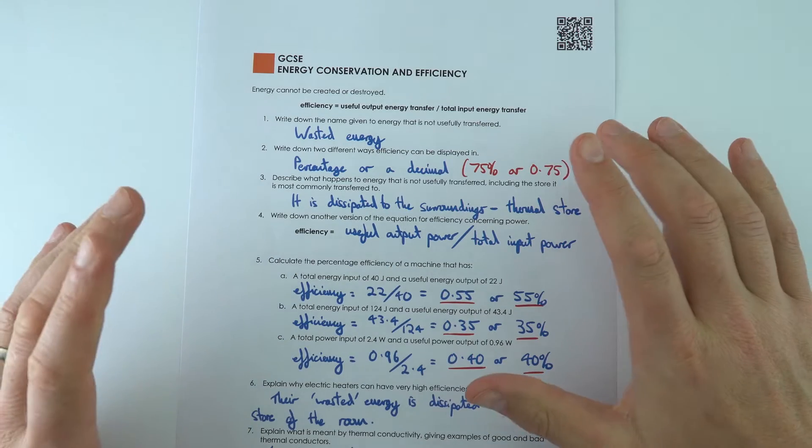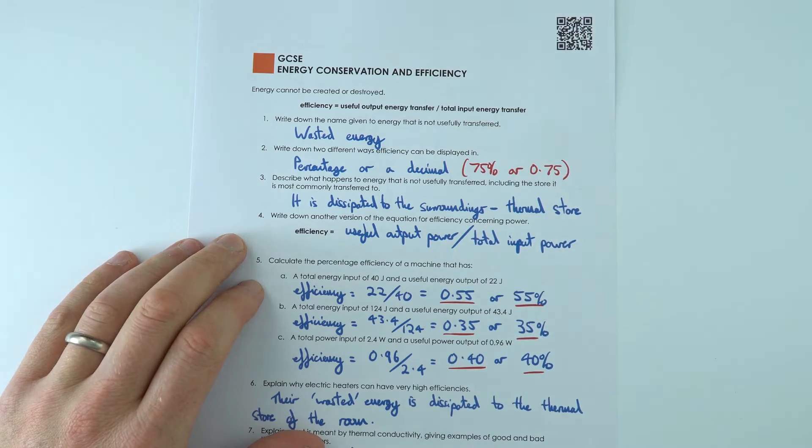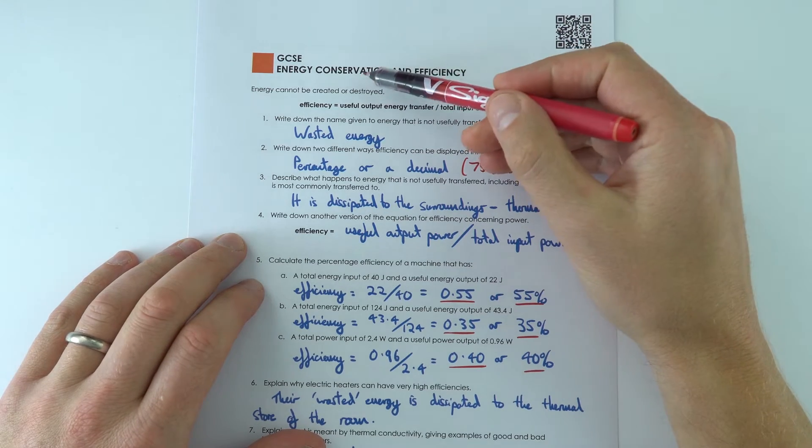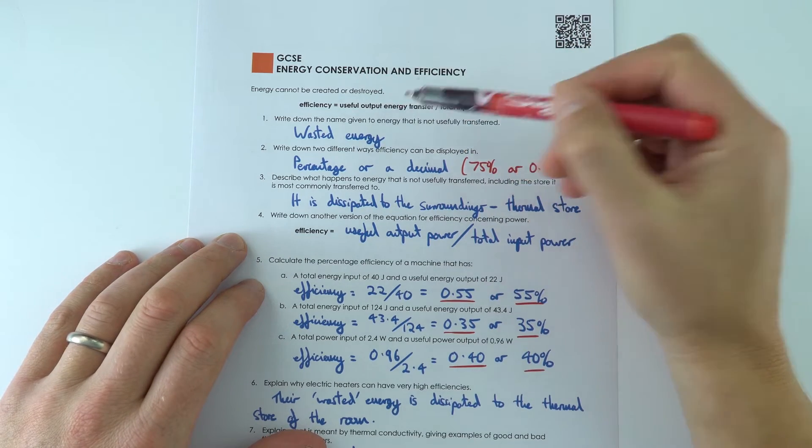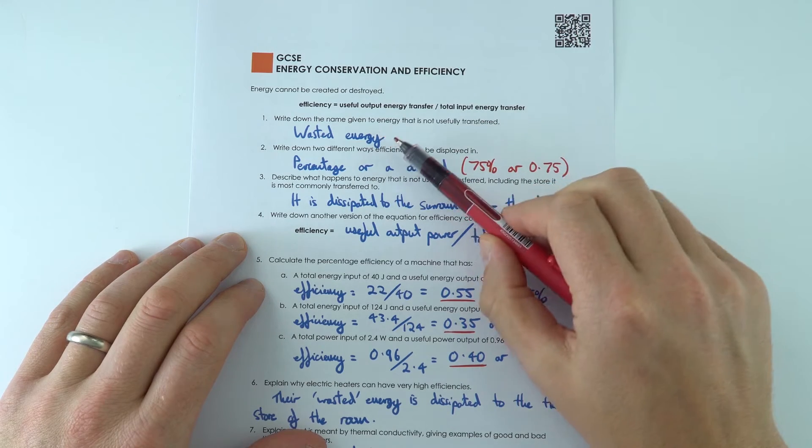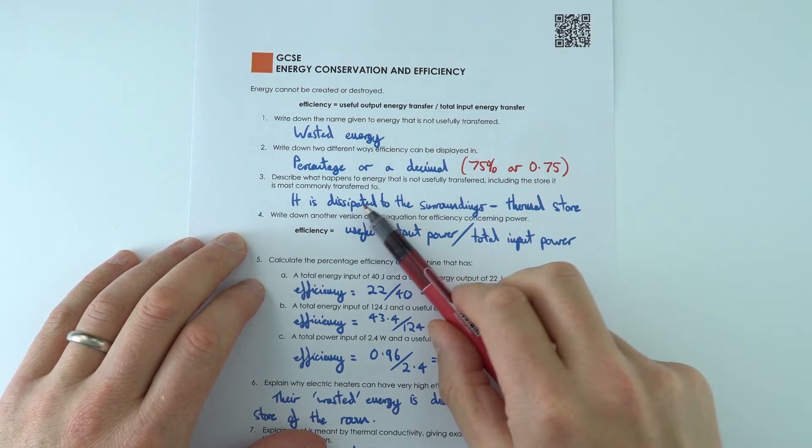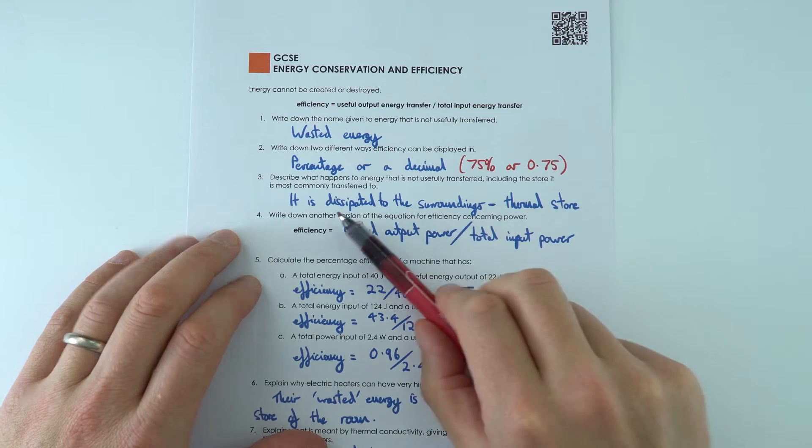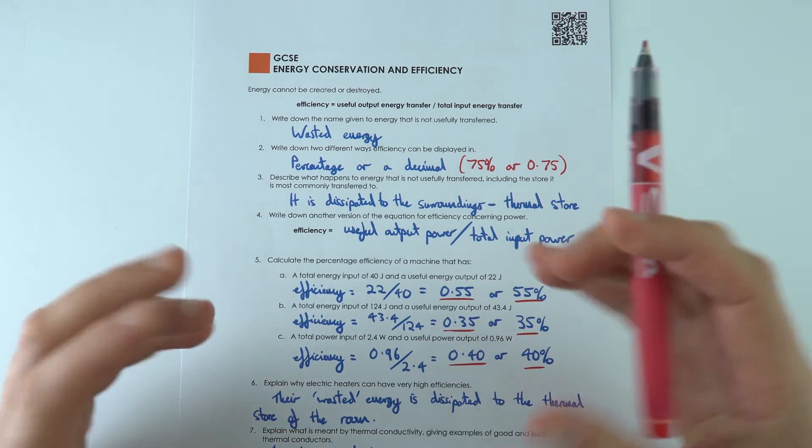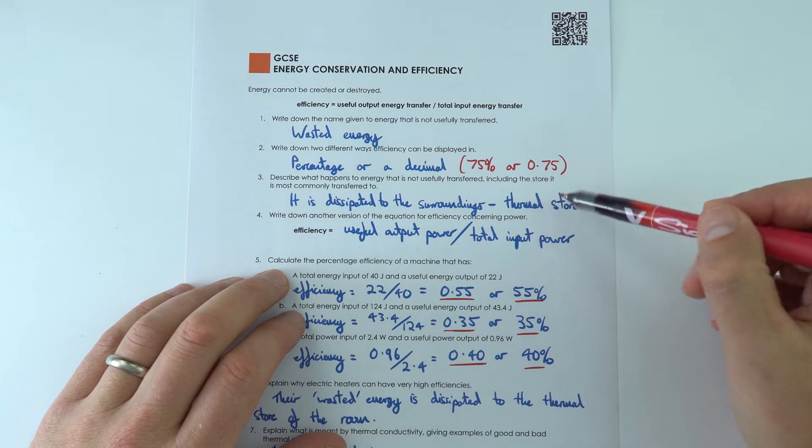Energy cannot be created or destroyed, but when we look at conservation we think about how much of the energy is transferred usefully to where we want it to be. Sometimes we have wasted energy which is dissipated to the surroundings, so that means it spreads out, it can't be usefully recovered and it often increases the thermal store of the surroundings.